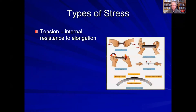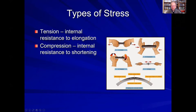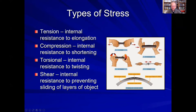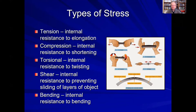There are five main types of stress. Tension stress is where an object is being pulled apart and elongated, and it resists with tension stress. Compression stress is where an object is being pushed together so that it is shorter. Torsional stress is where an object is being twisted and its resistance to twisting is a torsional stress. Shear stress is the internal resistance to avoid sliding of one layer of the object relative to the other. And bending stress is that stress developed within an object as it is attempted to be bent into a different shape.